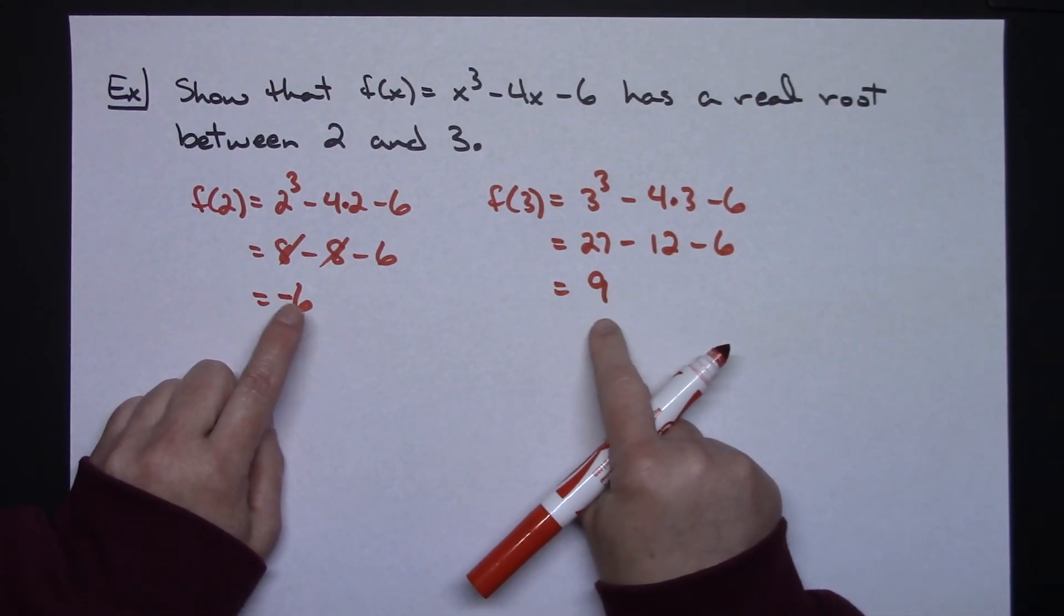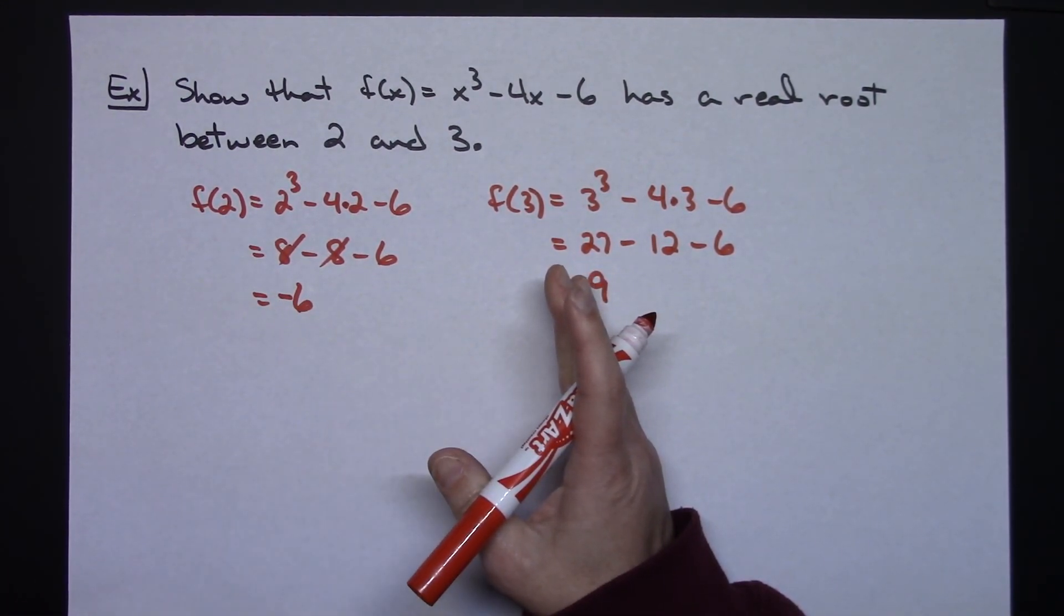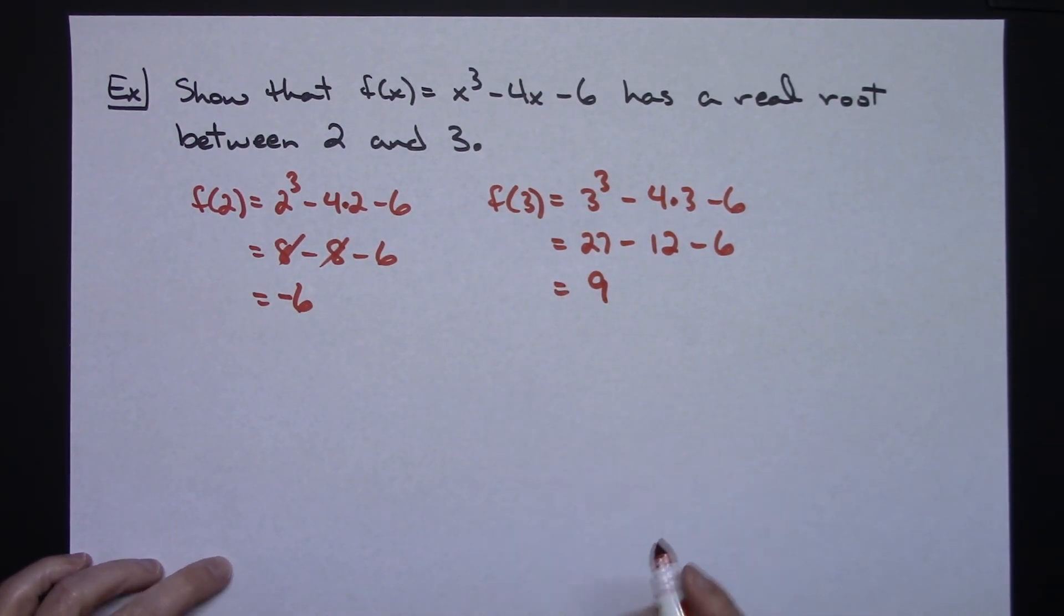So I do have a negative value and I have a positive value. So somewhere in that interval from 2 to 3, yes, I am going to have one real root. This function will have one real root.